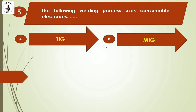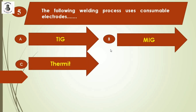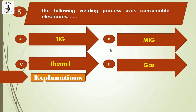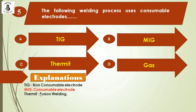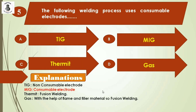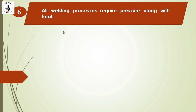Question 5: Which of the following welding processes uses consumable electrodes? Option A: TIG, option B: MIG, option C: thermite, option D: gas. TIG welding uses a non-consumable tungsten electrode. MIG welding uses a consumable wire electrode. Thermite and gas welding are fusion welding processes with no electrode. The right answer is option B: MIG welding.